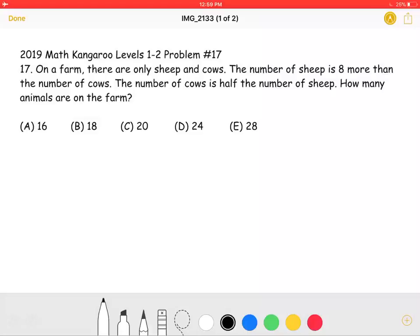On a farm there are only sheep and cows. The number of sheep is eight more than the number of cows. The number of cows is half the number of sheep. How many animals are on the farm?